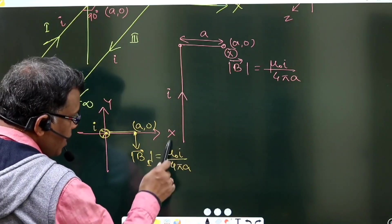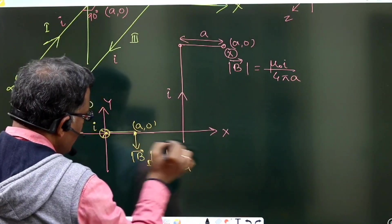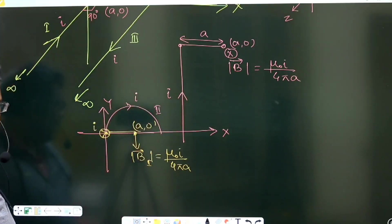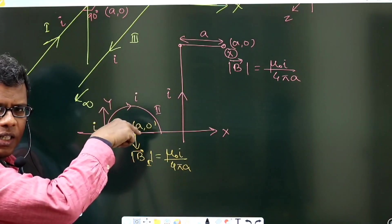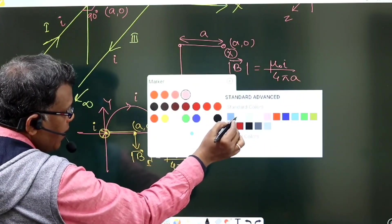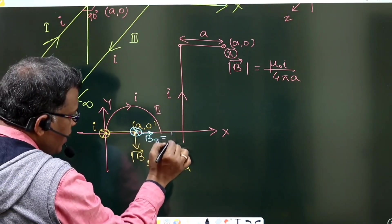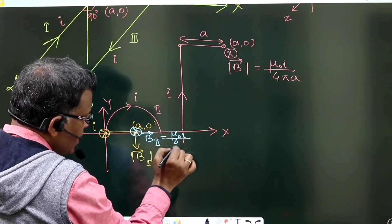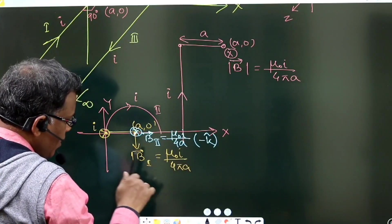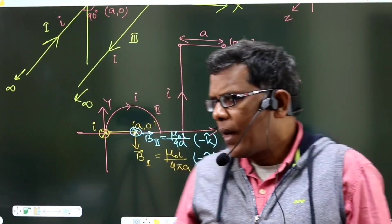Now for section 2: it is a semi-circular loop carrying current i on the xy plane. The center of the semi-circular loop is the required point. The current is clockwise, so the magnetic field is inward. The magnetic field B due to section 2 is into the plane: μ₀i/4 times the radius, going inward — negative z-axis, so minus k̂. For B₁, the direction is minus ĵ.